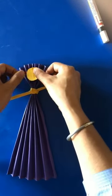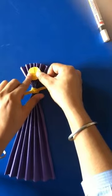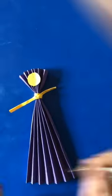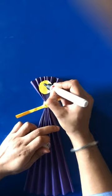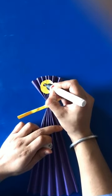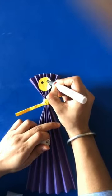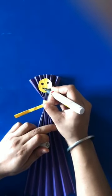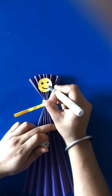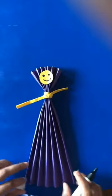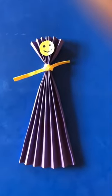Now we will make the eyes of the doll. You can take a marker or a black pen. Draw the eyes and give it a smiley. Your doll is ready. Thank you.